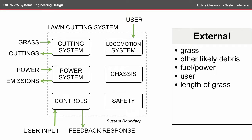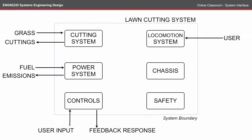The next step is to identify the relationships between the inputs and the subsystems. Here I've identified that there's some interaction between each of these things, indicated by the green arrows. Extending this further, we can start looking at the interactions within the subsystem. The locomotion system has an effect on the chassis; the chassis has an effect on both the power and the cutting systems; the power system has an effect on the cutting system; the controls have an effect on the power system; and the safety overrides things in the control and the power system.